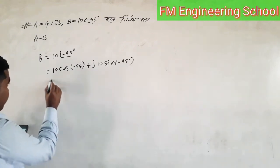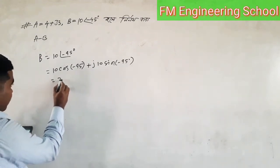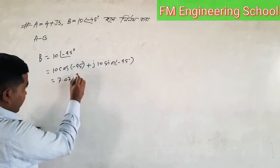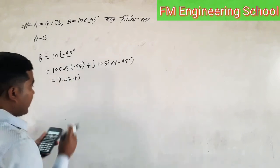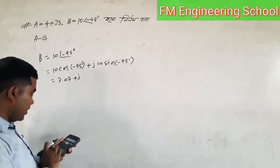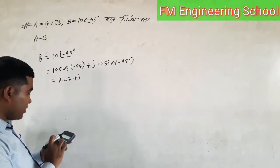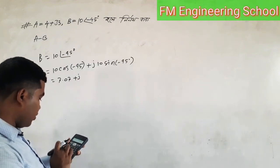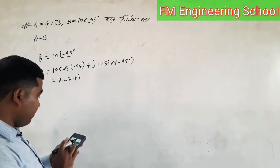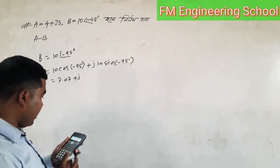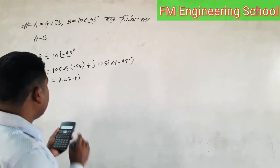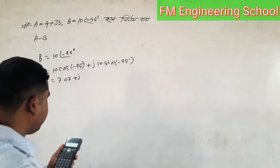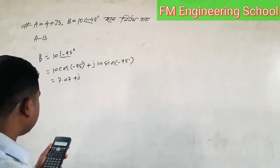cos(minus 45°) gives us 7.07, so we have 7.07 plus j of 10 sin(minus 45°), which gives us minus 7.07.